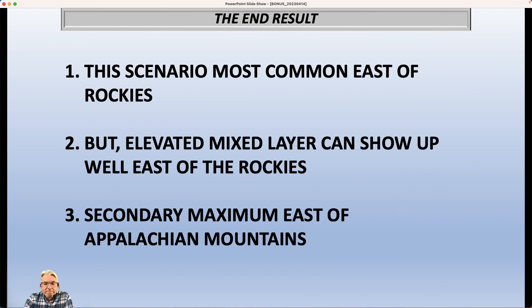This is most common east of the Rocky Mountains, but we have seen examples of this elevated mixed layer showing up well east of the Rockies — in this case, all the way to Ohio and Pennsylvania. There's a little bit of a secondary maximum east of the Appalachians. It's not as big of an effect as east of the Rockies because our mountains aren't as high, but there is still a secondary maximum that can contribute to severe weather in the Carolinas in certain situations.